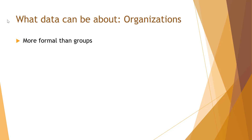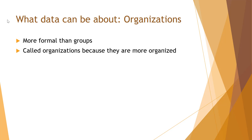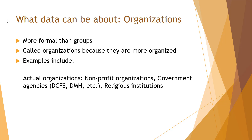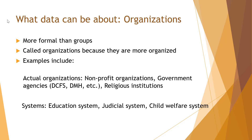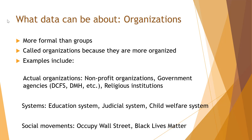Data can also be about organizations. These are more formal than groups — they have specific goals and more formal structure. Examples in social work include nonprofit organizations, government agencies like DCFS or the Department of Mental Health, and religious institutions. It can also include systems like the education system, the judicial system, the child welfare system, and social movements like Occupy or Black Lives Matter.